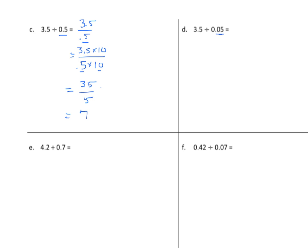In this case, we have hundredths. Let's rewrite this as a fraction: 3 and 5 tenths divided by 5 hundredths. Now how many hundredths do I have here? I have 5 hundredths. I want to get rid of that decimal, so I'm going to multiply both the numerator and the denominator by 100. So I have 3 and 5 tenths times 100, and 5 hundredths times 100. Multiplying 3 and 5 tenths by 100 gives 350, and 5 hundredths times 100 gives 5.